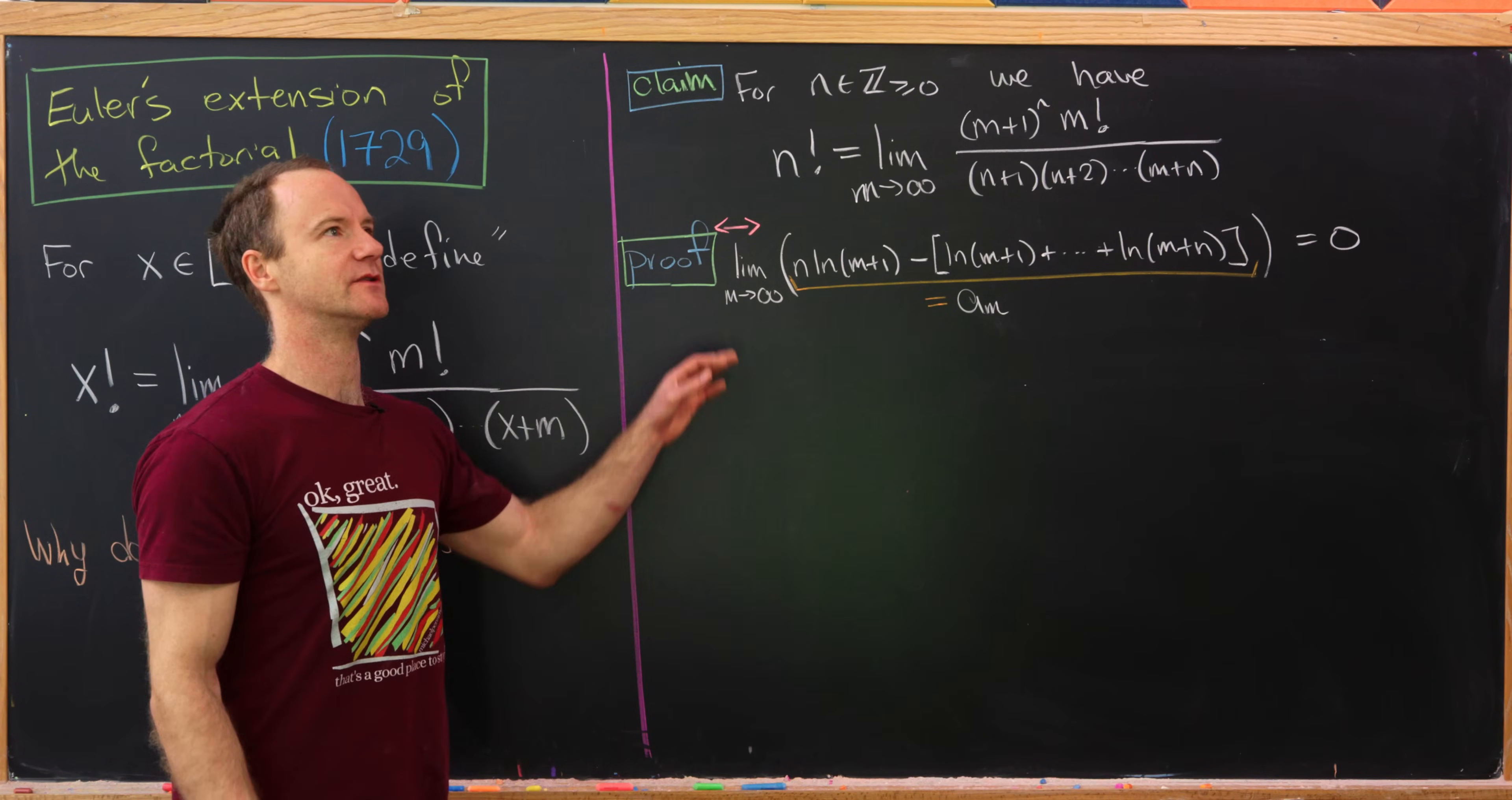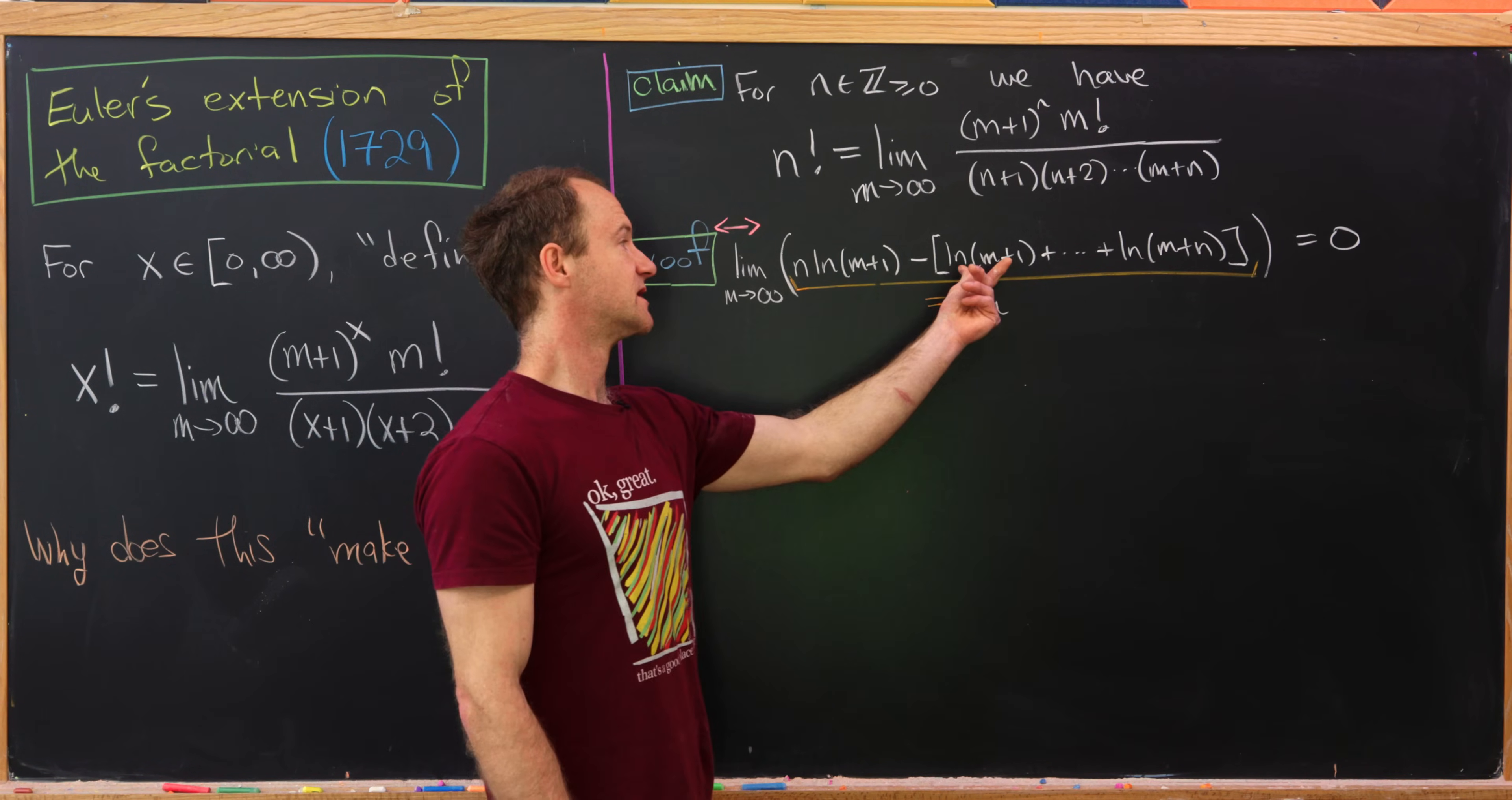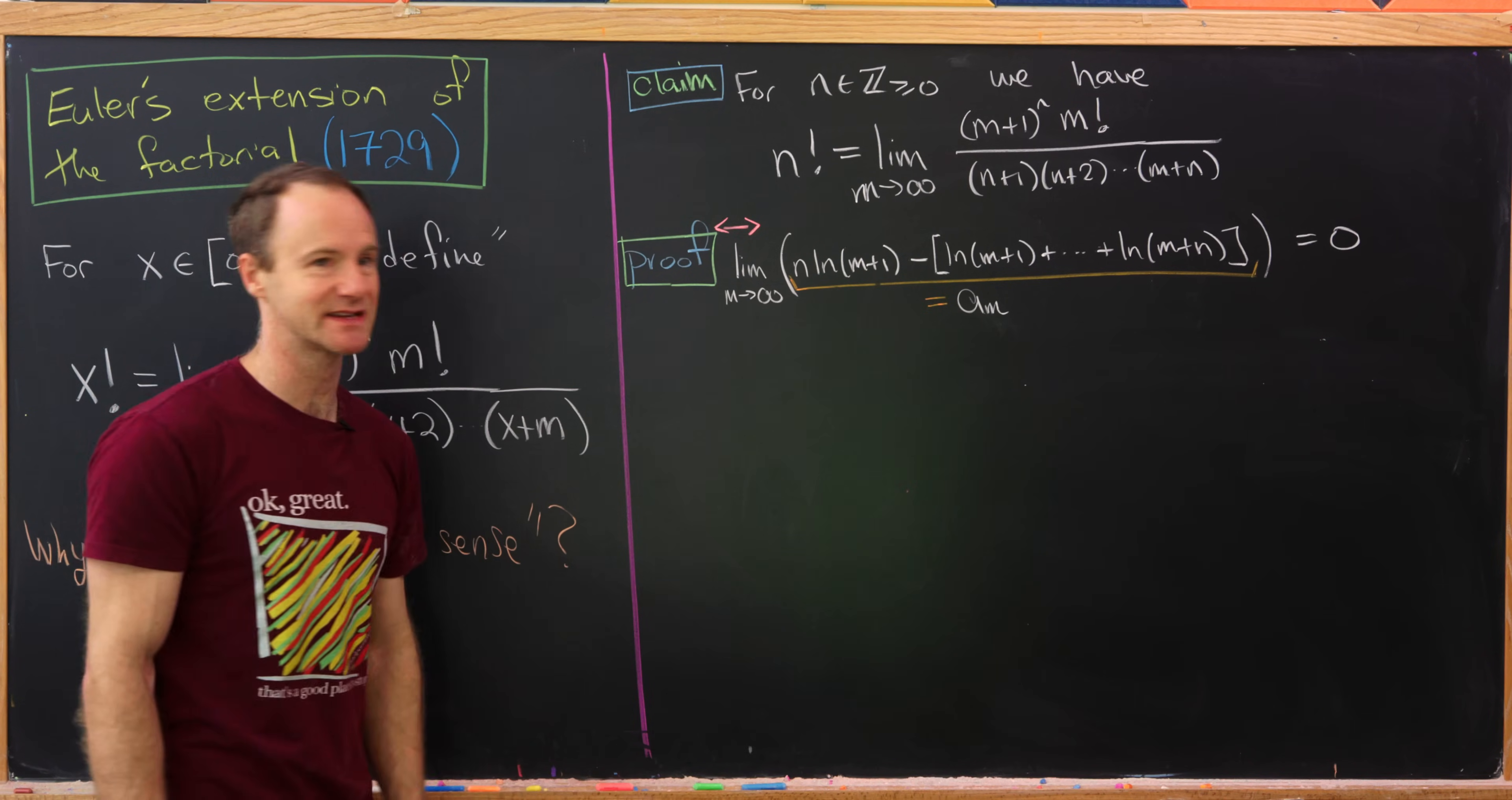So in the last board we argued that we needed to establish the following limit: the limit as m goes to infinity of n times ln(m+1) minus this sum of ln(m+1) up to ln(m+n), and we need all of that to be zero. So I'm going to introduce a little bit of notation here. I'm going to set this equal to a_m.